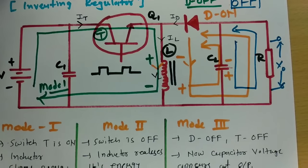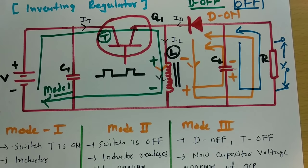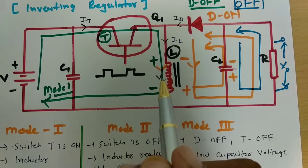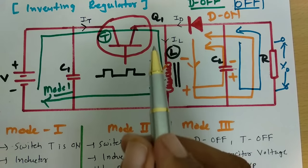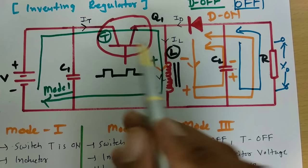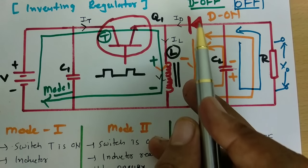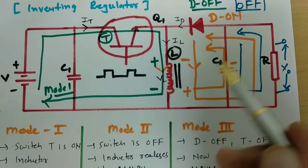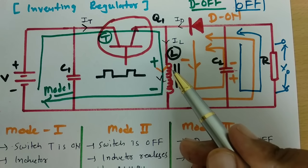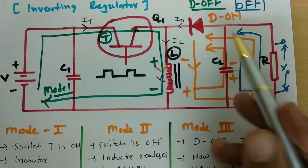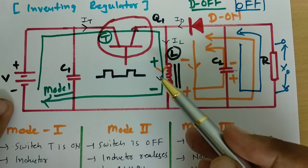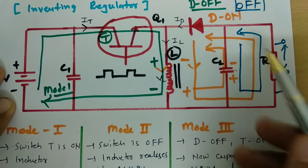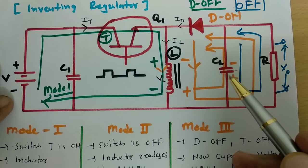In mode one, the inductor stores energy and the diode is off. In mode two operation, the switch is off and the diode conducts because the inductor releases energy. In mode three, the diode is off, inductor current and voltage are zero, and output current is passing because the capacitor voltage is supplying the output.